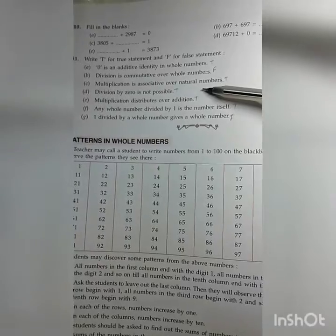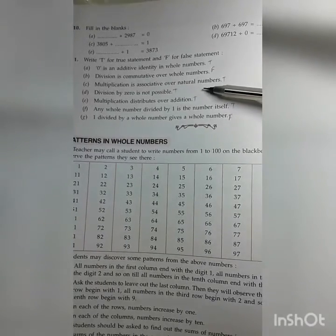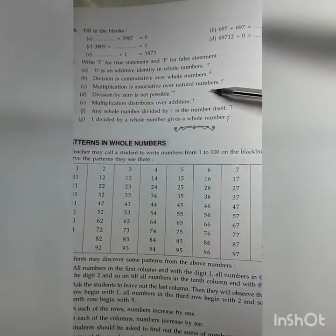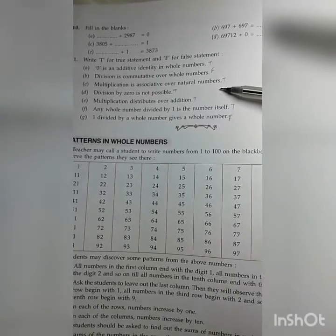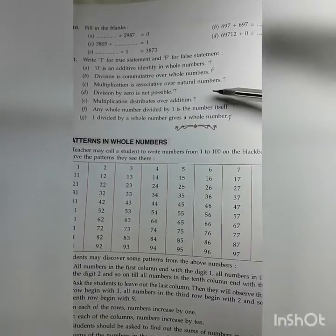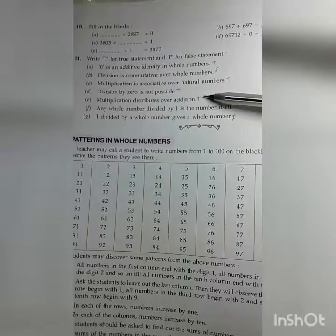C: Multiplication is associative over natural numbers. That is true. D: Division by 0 is not possible. True.